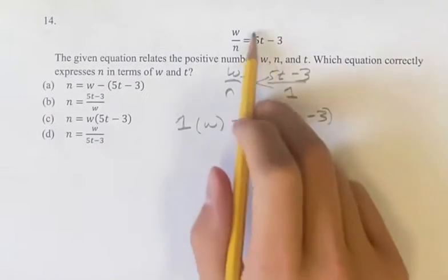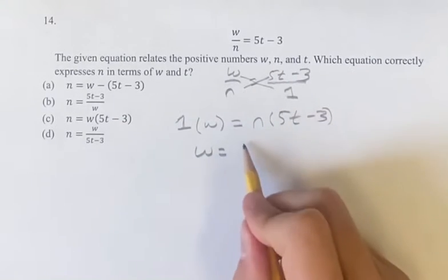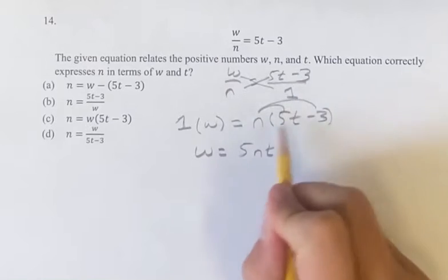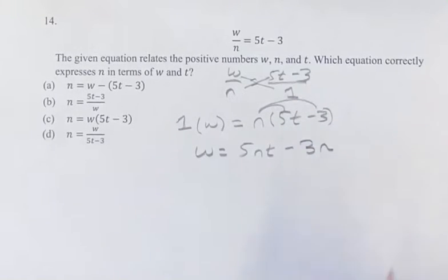This is going to be a lot easier to solve. So 1 times w is just w, and you have 5nt. Multiplying these, distributing that value n, minus 3 times n is just 3n.